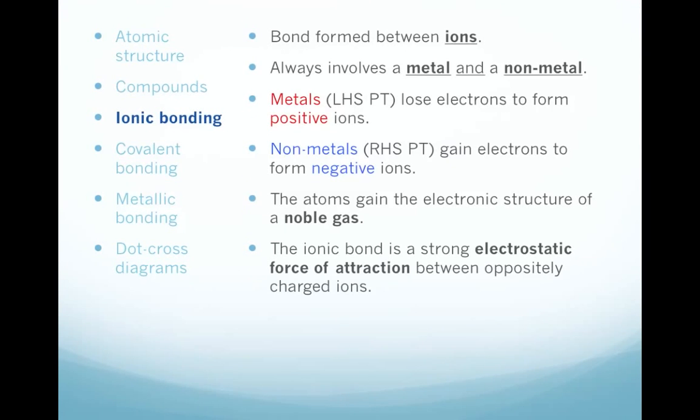We've been just looking at ionic bonding. Ionic bonding is where you get ions forming and it always involves a metal and a non-metal. So, if you see a compound and it contains a metal element from the left-hand side of the periodic table and a non-metal from the right-hand side of the periodic table you can tell it's going to be ionically bonded. Metals, on the left-hand side of the periodic table they lose electrons and in so doing form positive ions. The opposite happens to non-metals on the right-hand side of the periodic table they gain electrons to form negative ions. Atoms form ions because they want to gain the electronic structure of a noble gas. In other words, any shell with electrons in is complete. That makes them more stable. And an ionic bond is this strong electrostatic force of attraction between oppositely charged ions.